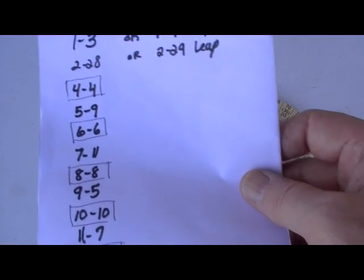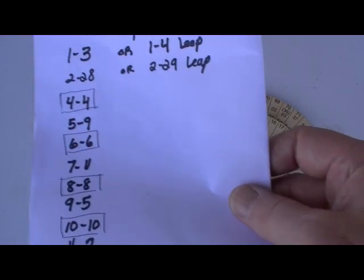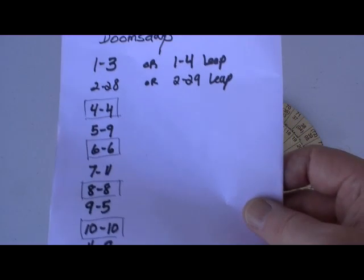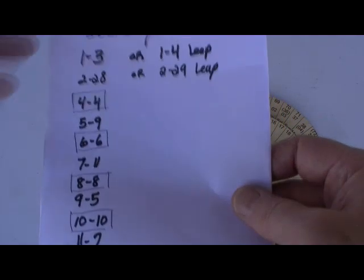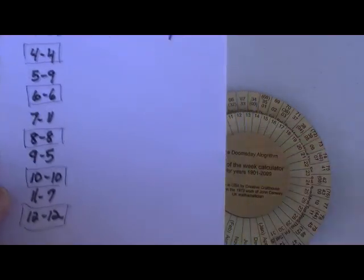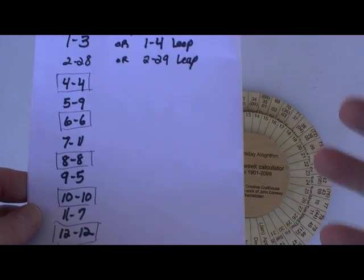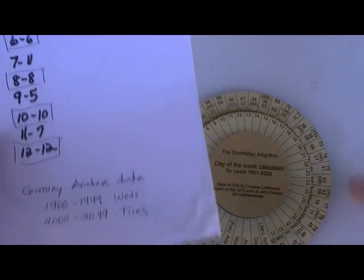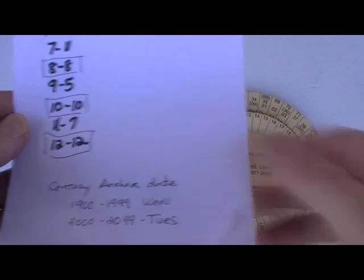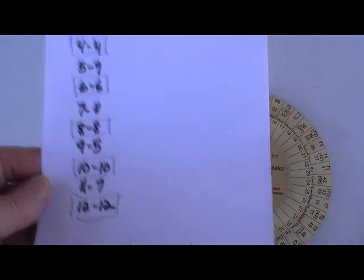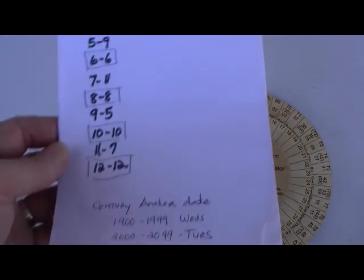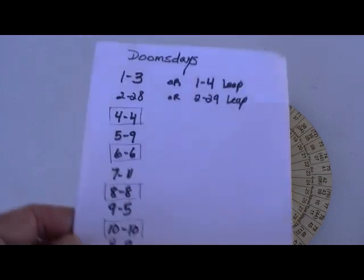Knowing this, you see, you can actually in your head determine the day of the week for any given day by knowing this information and also the doomsday for the particular year, which is based on the century anchor date. There's a mathematical process which the average person can do, and a really bright person can do in seconds.